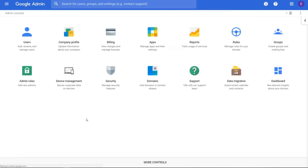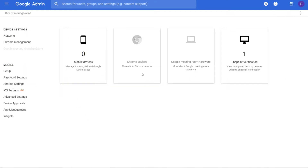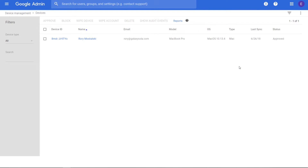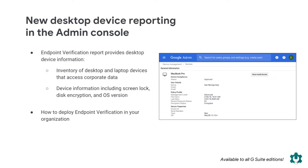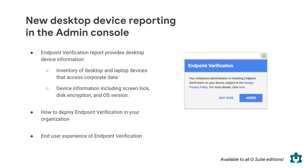To see the report in the admin console, go to Device Management, then Endpoint Verification. Endpoint Verification is available for Chrome OS, Mac OS, and Windows devices and requires a Chrome extension. When the Endpoint Verification extension is installed on a user's device, a notification is shown to users. The user must click Agree before data from their device is shown in the admin's Endpoint Verification report. If the user does not click Agree, information about that device is not shown. Check out our Help Center to learn more.